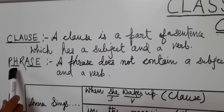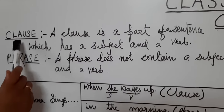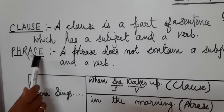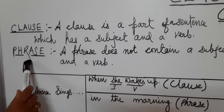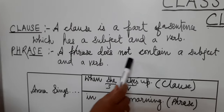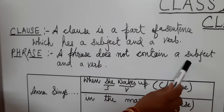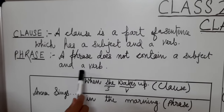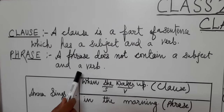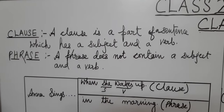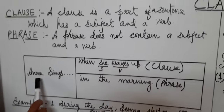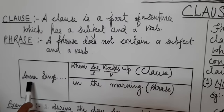What is the difference between a phrase and a clause? A phrase is also vaakya anksh — it is also part of a sentence. But a phrase does not contain a subject and a verb. Phrase mein subject bhi nahi hota hai, verb bhi nahi hota hai. So we can see the difference between a clause and a phrase.